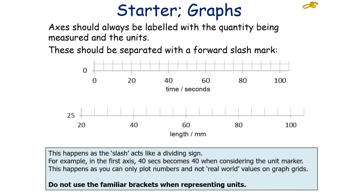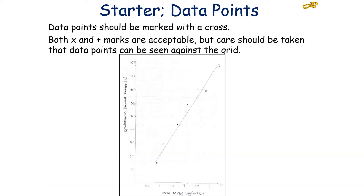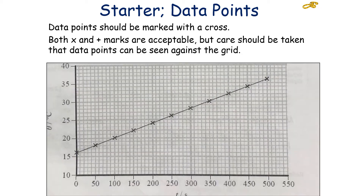The axes of a graph should be labelled with the quantity being measured and the units, separated with a forward slash mark, as shown in the diagrams on screen. The slash acts as a dividing sign — so for example, 40 seconds becomes 40 when considering the unit slash, because we can only plot numbers and not real-world values on graph grids. You do not use familiar brackets when representing units on a graph. Data points should be marked with a cross — both the cross and plus marks are acceptable — but care should be taken that the data points can be seen against the grid.